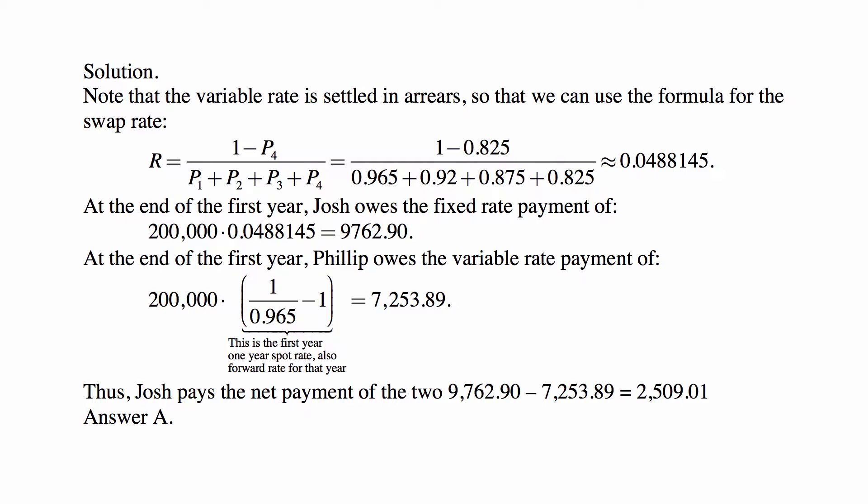So Josh owes the fixed rate payment of that interest rate times $200,000 — that's $2,762.90. And Philip owes the variable rate payment. We need to figure out what the first-year one-year spot rate is, which is also the forward rate for the first year — the first-year one-year forward rate is the same as the one-year spot rate. That's (1 divided by the price of a zero-coupon bond maturing at time 1) minus 1, which is really 1 over V, or equivalently 1 plus i minus 1 — the interest rate that corresponds to that. That payment is $725.38 (wait — $7,253.89).